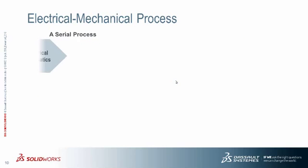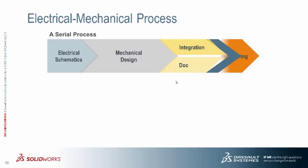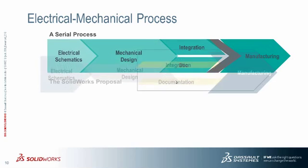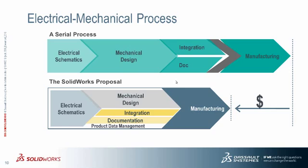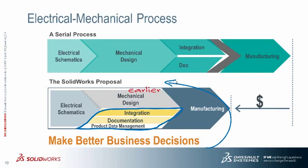The standard traditional electromechanical process involves developing electrical schematics, then the mechanical design, integrating and documenting them, and finally producing them in manufacturing. We felt there was a better way. Being able to work in parallel instead of sequentially is a much better approach — issues can be found earlier in the process, allowing for better business decisions to be made earlier. New tools were needed to replace the traditional tools in the marketplace.